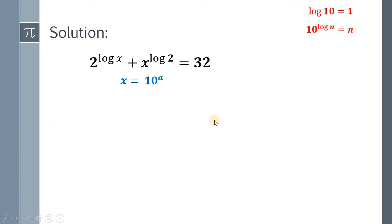When we substitute x by 10 raised to a, we have 2 raised to logarithm of 10 raised to a plus 10 raised to a raised to logarithm of 2 equals 32. Now, simplify using some properties of logarithm and laws of exponent. If we have logarithm of b raised to n, it is equal to n multiplied by the logarithm of b. Also, if we have b raised to n raised to m, it is equal to b raised to n times m.